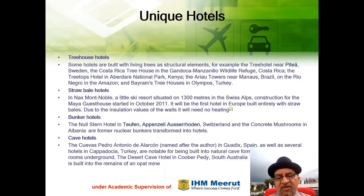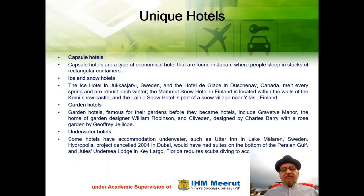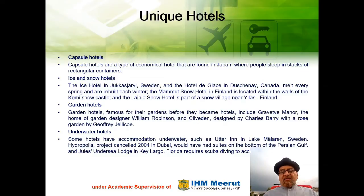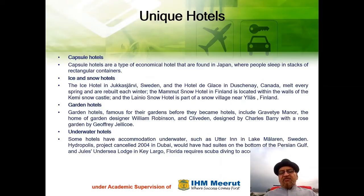Capsule Hotels are a type of economical hotel found in Japan, where people sleep in stacks of rectangular containers. Ice and Snow Hotels: the Ice Hotel in Jukkasjärvi, Sweden, and the Hotel de Glace in Duchesnay, Canada melt every spring and are rebuilt every winter. The Mammut Snow Hotel in Finland is located within the walls of the Kemi Snow Castle, and the Lainio Snow Hotel is part of the snow village near Jalas, Finland.